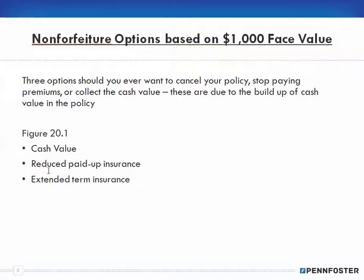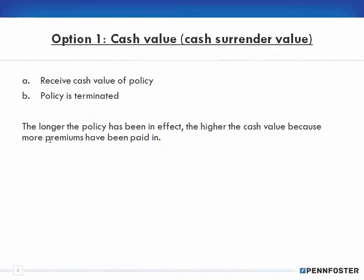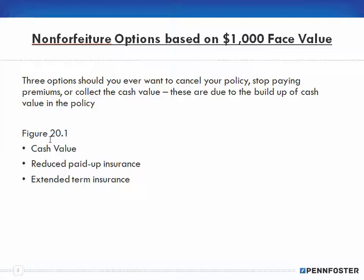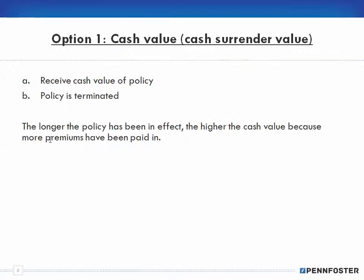Non-forfeiture options — there are three options: the cash value, the reduced paid-up insurance, and the extended term insurance. These are three options should you ever want to cancel your policy, stop paying premiums, or collect the cash value. These options exist due to the buildup of cash value in your policy. We're going to be looking at Figure 20.1, which I've reproduced on the next slides.